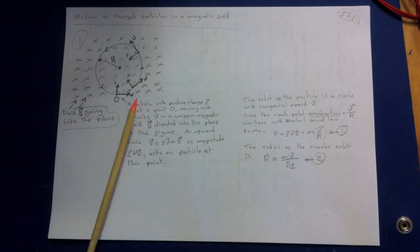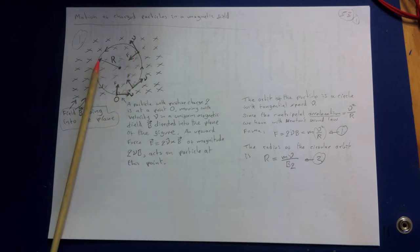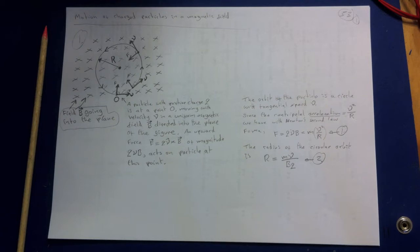As it moves we get these positions here. The magnitude of the force is constant since the magnitudes of Q, V and B are constant. The particle therefore moves under the influence of a force whose magnitude is constant but whose direction is always at right angles to the velocity of the particle.